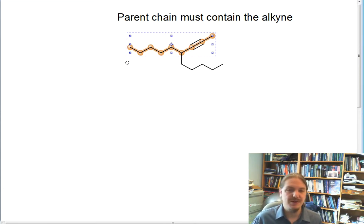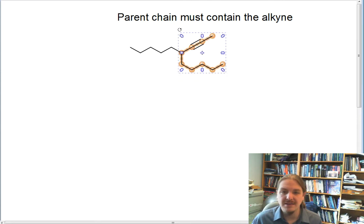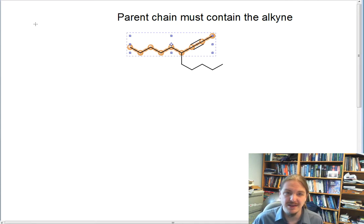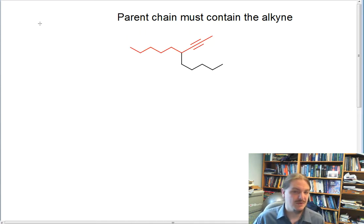And there are two possible parent chains that contain the alkyne. This one that I've got highlighted is 1, 2, 3, 4, 5, 6, 7, 8, 9 carbons. And this one, 1, 2, 3, 4, 5, 6, 7, 8, 9 carbons. So it turns out in either case, we're going to have a nine carbon parent chain. In this case, both parent chains would be the same. I'm going to go ahead and highlight this parent chain in red so that we can know which one we're talking about.